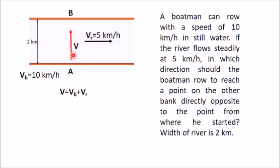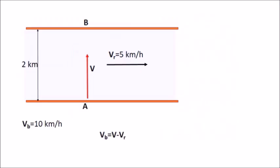Since V equals VB plus VR, to find VB we compute VB equals V minus VR. First draw the river velocity VR to scale — for example, 5 cm for 5 km per hour using a scale of 1 km per hour equals 1 centimeter. Then draw the final velocity V from the start point of VR.